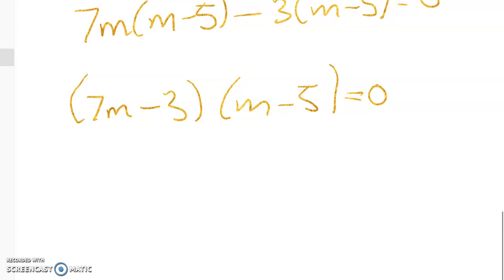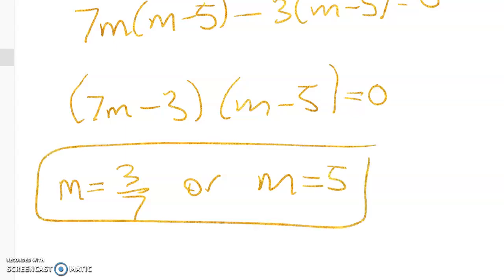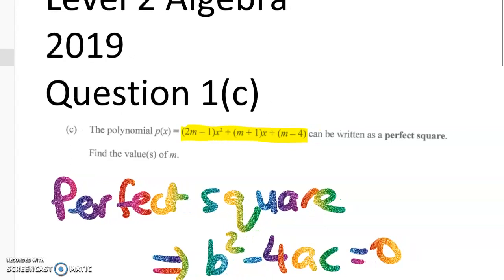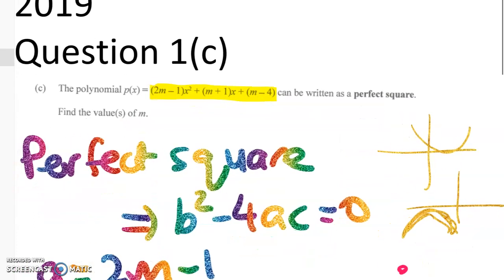So the two values of m are: m equals 3 sevenths, or m equals 5. Let's go back and check we've answered the question — and yes, we have. We've explained what the perfect square thing is all about, and the big idea is that the perfect square pattern means we've got a zero discriminant. Thanks for watching.